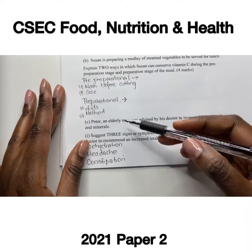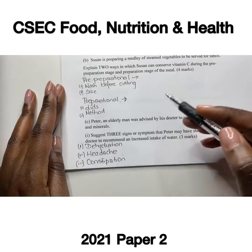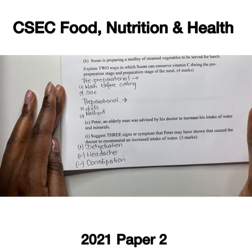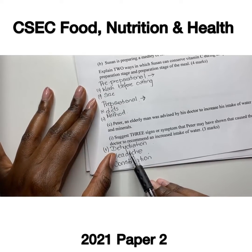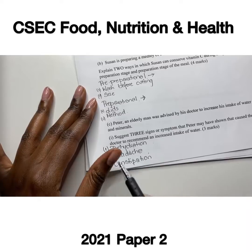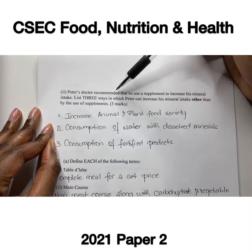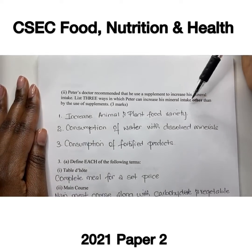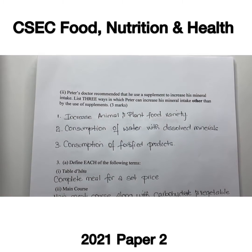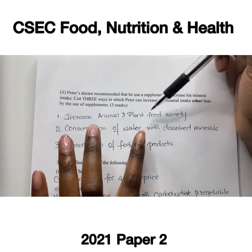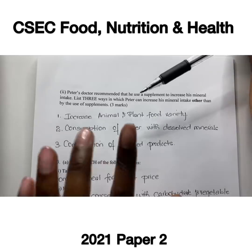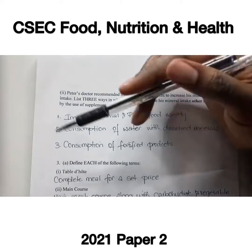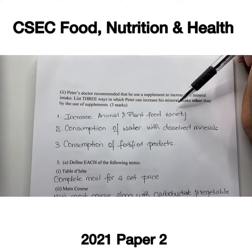Part C: Peter, an elderly man, was advised by his doctor to increase his intake of water and minerals. Three signs or symptoms that may have caused this recommendation include signs of dehydration, headaches, and constipation. Peter's doctor also recommended a supplement to increase mineral intake. Three other ways Peter can increase mineral intake include adopting a broad, healthy diet including animal and plant foods; drinking fortified water containing dissolved minerals; and consuming food products fortified with minerals.